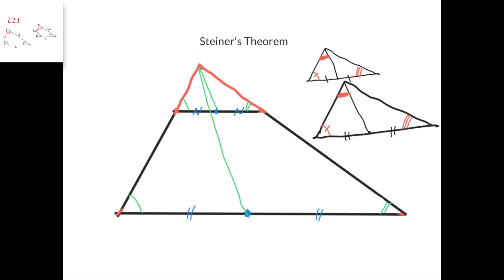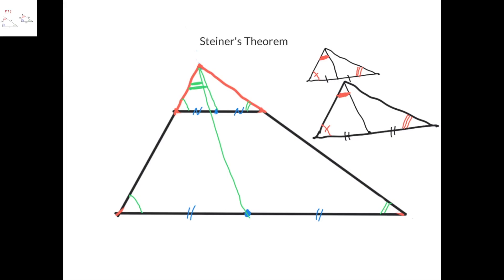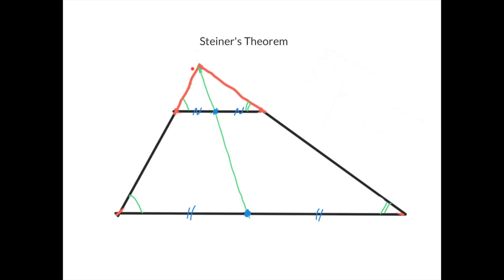Similarly, in our picture, we have that this angle equals this angle here. And because these two angles are equal, we can say that this line and this line are exactly the same line. So we've shown that this point, this midpoint, and this midpoint lie on the same line.